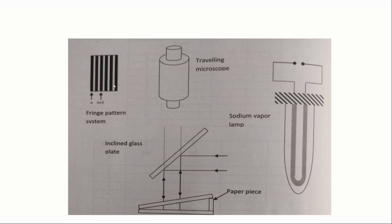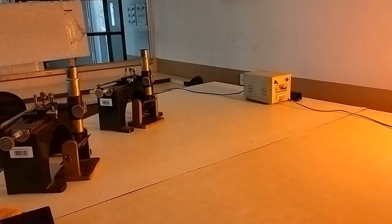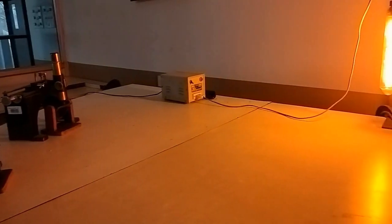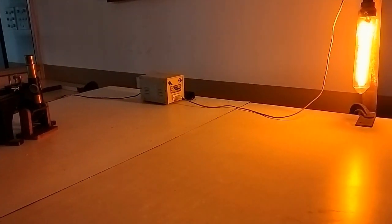This is the interference pattern we are going to get. After getting the interference pattern, we have to start taking the readings. Now we shall learn how to perform the experiment using the experimental apparatus.